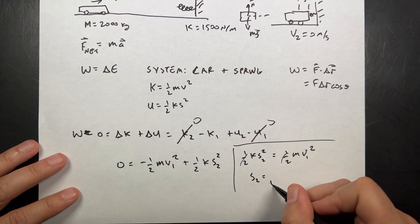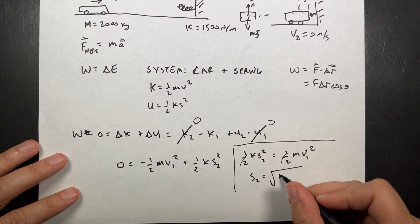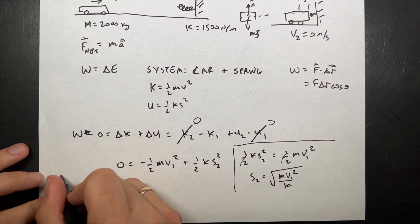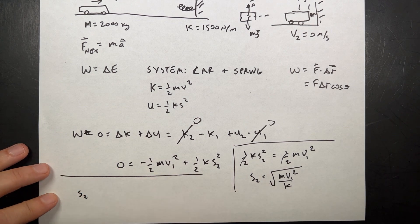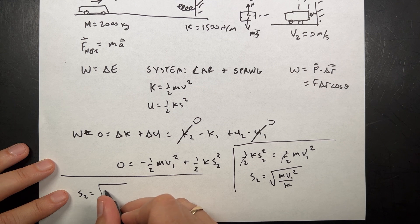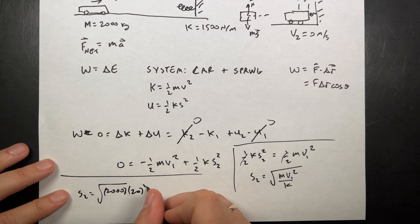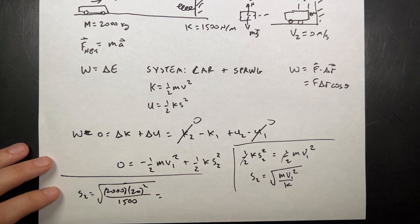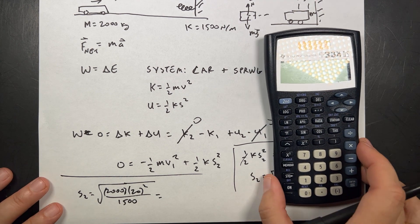And then I divide by k and take the square root. S2 is going to be the square root of m v1 squared over k. So let's put that over here. S2. Can you see that? Yeah. Square root of m, 2,000, v1 squared, 20 squared, all that over 1,500.